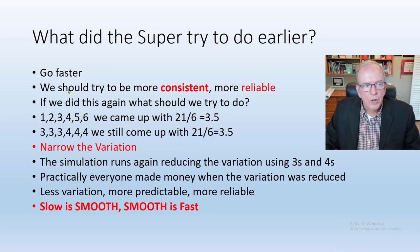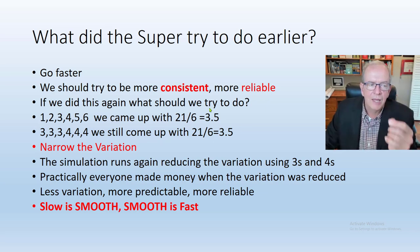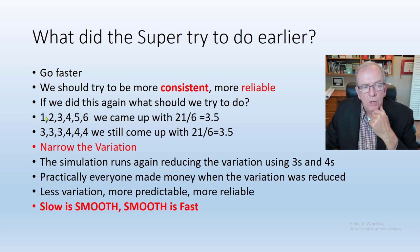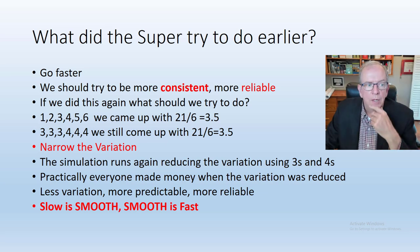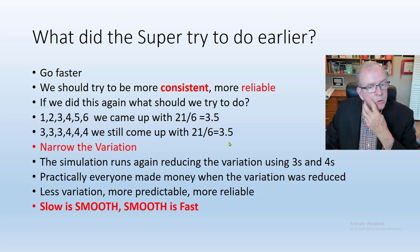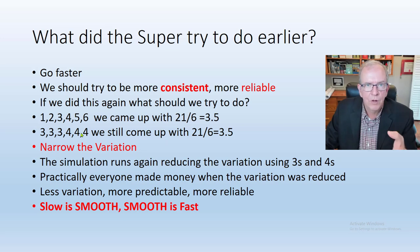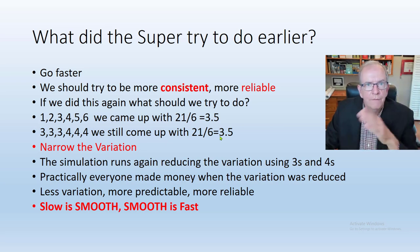The site superintendent tried to go faster. What we should try to be is more consistent and reliable. If we did this simulation again, what should we try to do? We have that single die — and if we were able to lessen the variation, even moving from a range of one-to-six to two-through-five by removing those extremes, that would improve the variation somewhat. Ideally, if we're able to get it down to only rolling a three or a four, you're going to come closer to that 3.5 average. There is some randomness, but you're still going to be closer to 3.5 than if you've got variation as high as one through six.